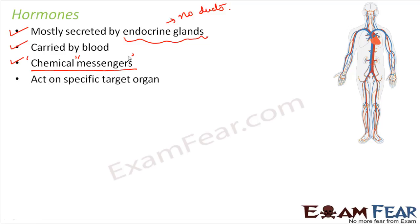Hormones act on a specific target organ. They are released by endocrine glands into the blood, and blood carries them to a particular target organ. It is something like posting a letter to a friend: you write the letter, put it in an envelope, write your friend's postal address, and post it — it gets delivered to that exact address. If the address is New Delhi, the letter goes to New Delhi, not Bombay or Pune or Chennai. Similarly, hormones must reach a specific target site, and blood carries them there. So hormones are very specific in their action.